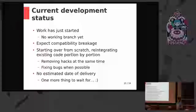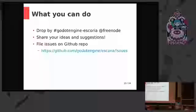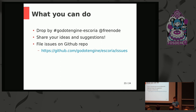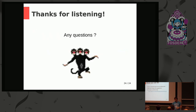So of course, no estimated date of delivery. For those of you who are already waiting for Godot, that's one more thing to wait for. What you can do currently: you can drop by on IRC — I'm usually idling on the Godot Engine Escoria channel and there are some people idling there as well. You can share your ideas and suggestions. This is the Escoria repository — it's on the official Godot Engine account since it was related in a certain fashion with Godot. If you have any ideas or suggestions, you can also file an issue there. That's it. Thanks for listening, if you have any questions.